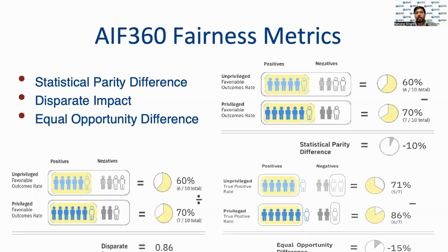The AIF360 framework consists of over 70 metrics that can be used to assess fairness of AI systems. The statistical parity difference is the difference in the probability that privileged and underprivileged classes receive a particular outcome. Statistical parity is an equity measure where members of a group have an equal chance of having the same outcome.